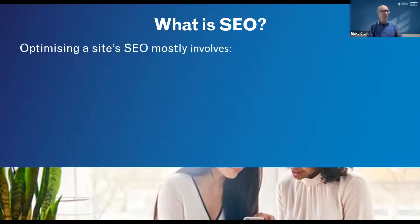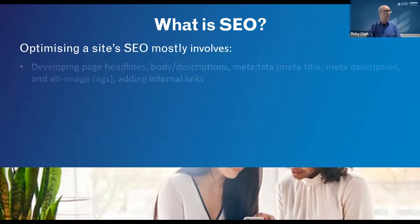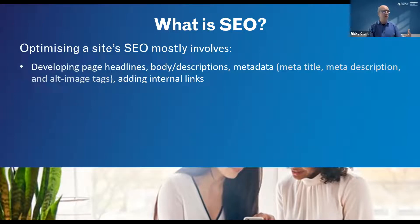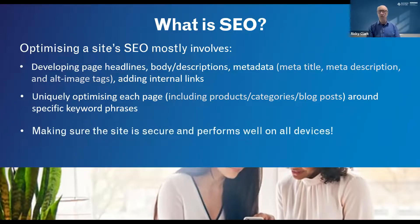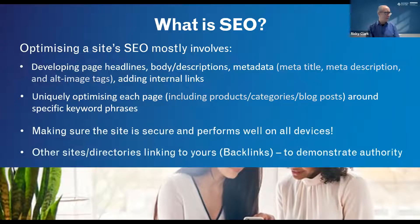SEO is mostly about optimizing your site's content - developing page headlines, product descriptions, body text, and metadata, which are simple things you can do yourself. You also need internal links, and you need to optimize each page or piece of content around a specific keyword phrase - ideally three to five words - and make sure your site performs well and has an SSL certificate.